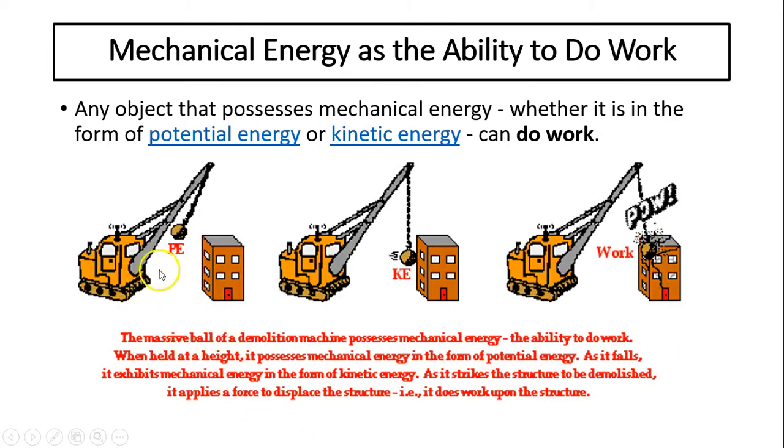Let's take a look at this example. This is a wrecking ball doing work on the building. How can it do work? First, you'll have to lift this, do work, so the ball will possess potential energy at this point. When the ball comes down, that potential energy changes into kinetic energy.